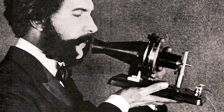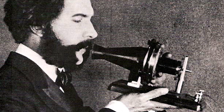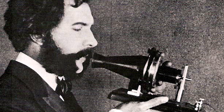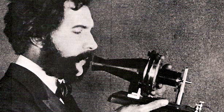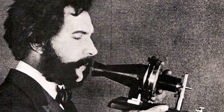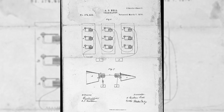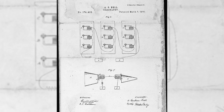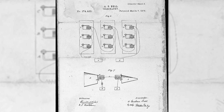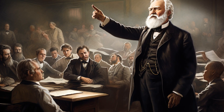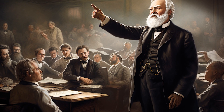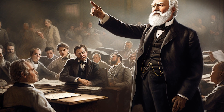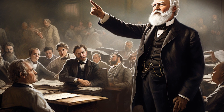In 1875, Bell successfully transmitted speech over a wire and filed for a patent on the same day. He called his invention the telephone. Bell's patent covered the method of transmitting speech over a wire and the apparatus for doing so. He demonstrated his invention to the public for the first time in 1876, and it received a great deal of attention.